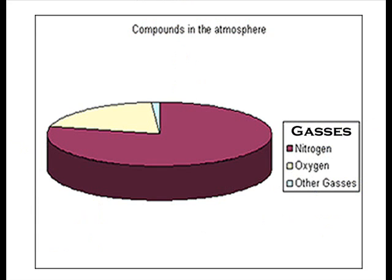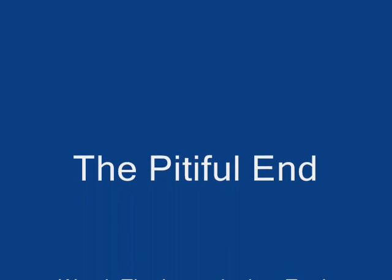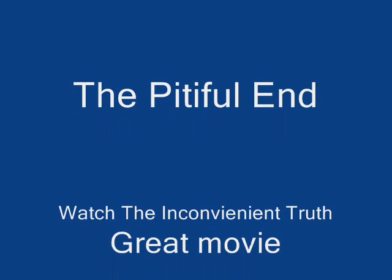Here is the pie chart. About 75% is nitrogen. Oxygen is about 25%.